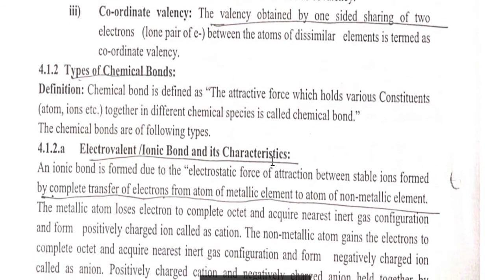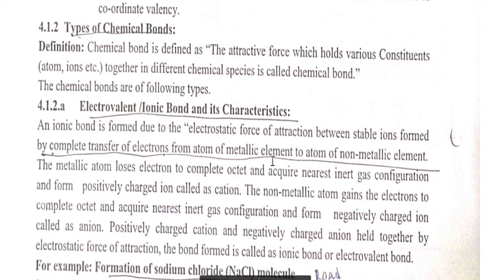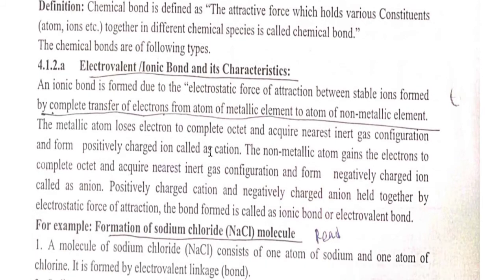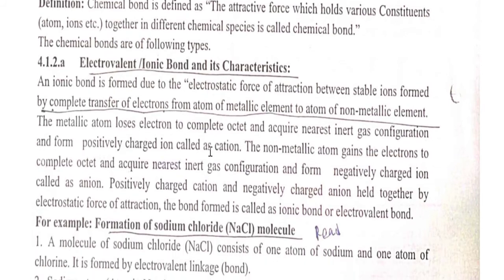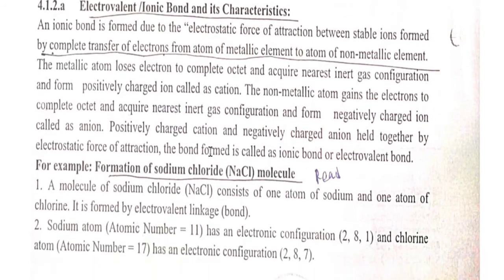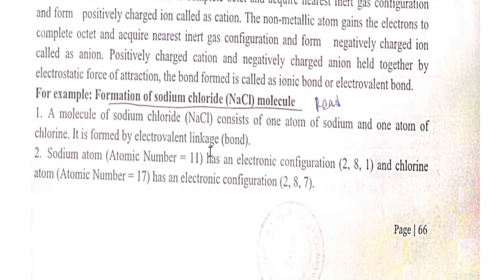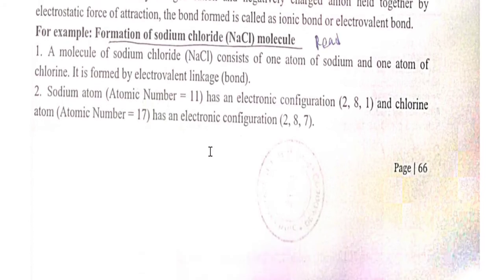The first type of bond is the electrovalent bond, also known as ionic bond, which is formed by complete transfer of electrons. An example of ionic bond formation is sodium chloride (NaCl).